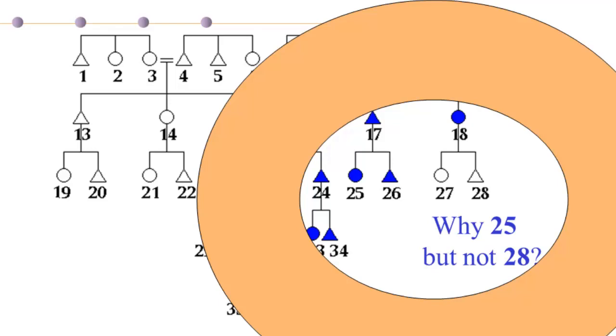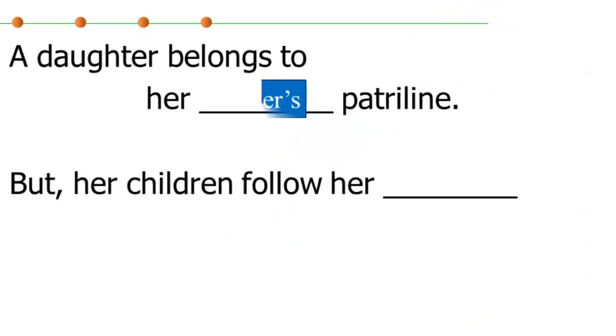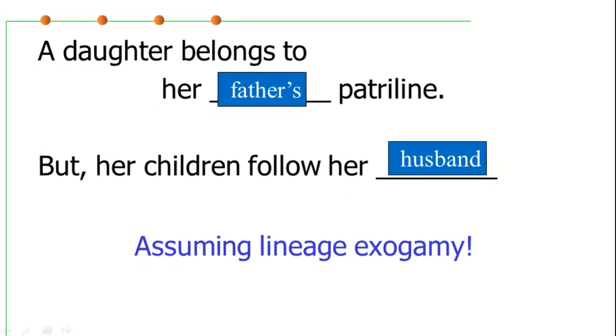What we see is that eighteen, up here on this chart, is female, and that means that twenty-seven and twenty-eight are going to follow her husband's patrilineage. So the daughter belongs to her father's patriline, her children follow her husband, daughters follow their father, but this assumes lineage exogamy, and that's not always the case.